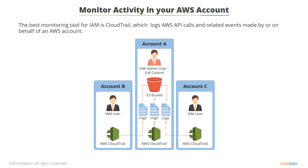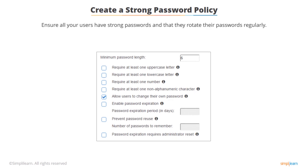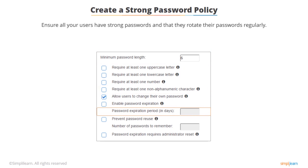The best monitoring tool for IAM is CloudTrail, which logs AWS API calls and related events made on behalf of an AWS account. User activity is written to a log and stored in an S3 bucket for future use. You need to ensure that your users require strong passwords and that they rotate their passwords periodically. Using the IAM password policy page, you can define requirements such as minimum length, whether it requires non-alphanumeric characters, how frequently they must be rotated, and more.